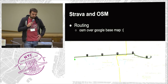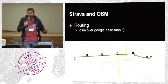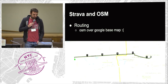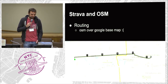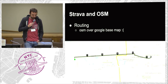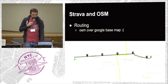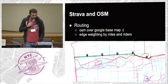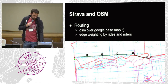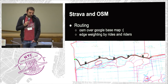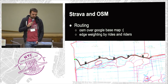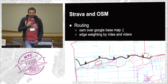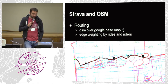How we use OSM: we use it for routing. We have Strava routing, which is essentially OSM routing over a Google map. If you route from point A to point B, you get a route, but if you overlay the heat map, you can see that no one really rides on that road — everyone goes right down the middle through the park. We've done edge weighting based on number of rides and unique rides to provide a more intuitive route.